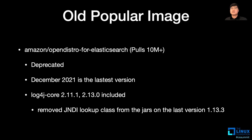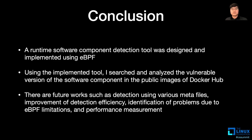Another case involves deprecated projects. One image with over 10 million pulls is a project that ended in December 2021. Fortunately, the last version responded to Log4Shell by removing the JNDI lookup classes, but various vulnerabilities still exist. This concludes the presentation on the detection of runtime software components using eBPF. Thank you for your attention.